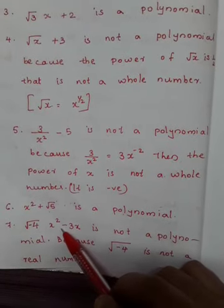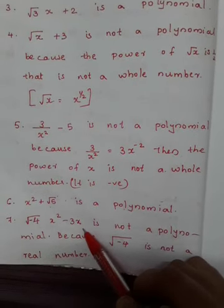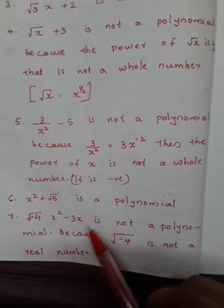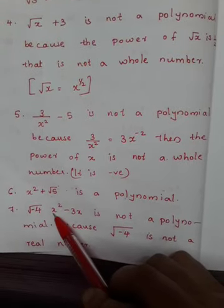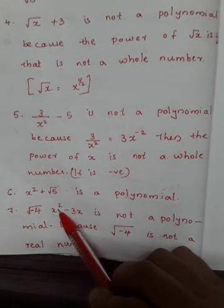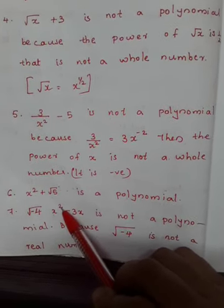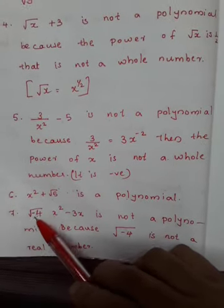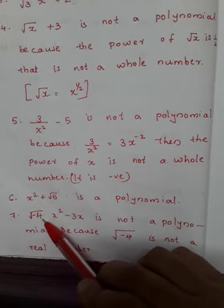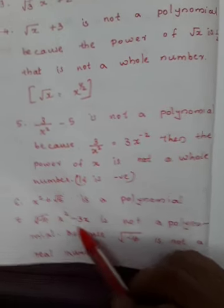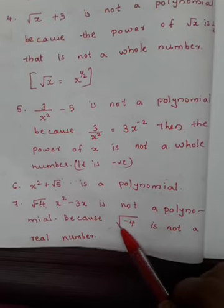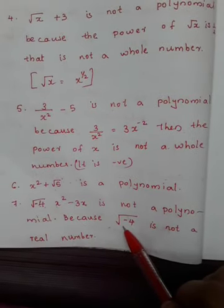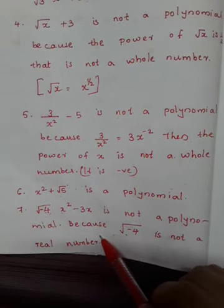The last example is √(-4)·x² - 3x: it is not a polynomial. Why? √(-4) is the coefficient of x², and √(-4) is not a real number. The square root of a negative number is not a real number.